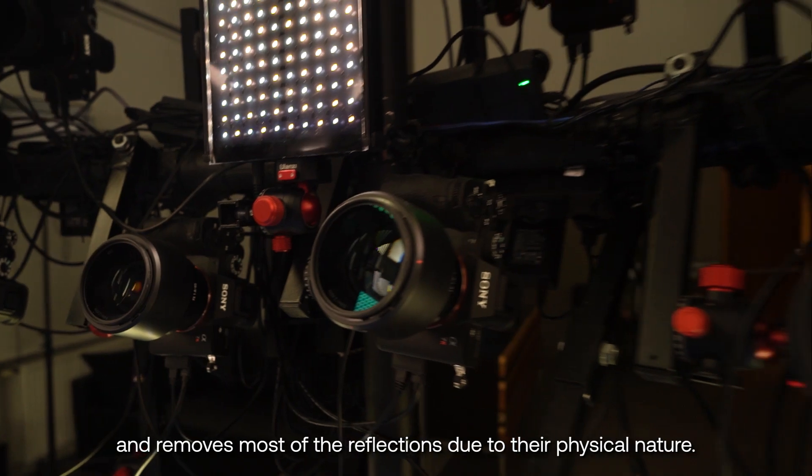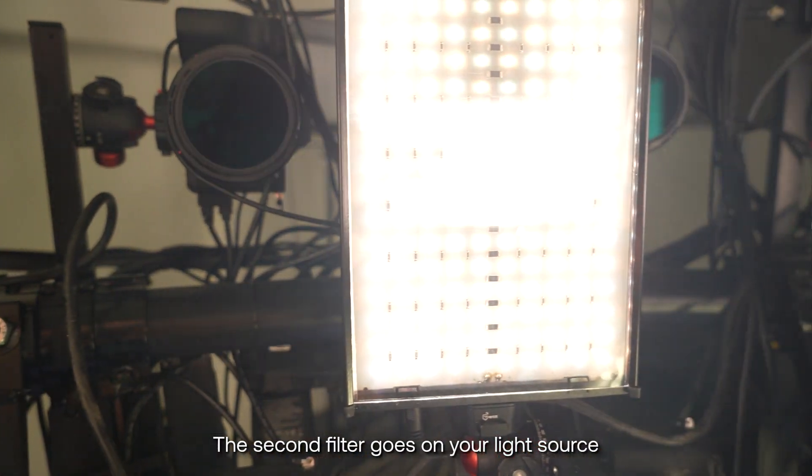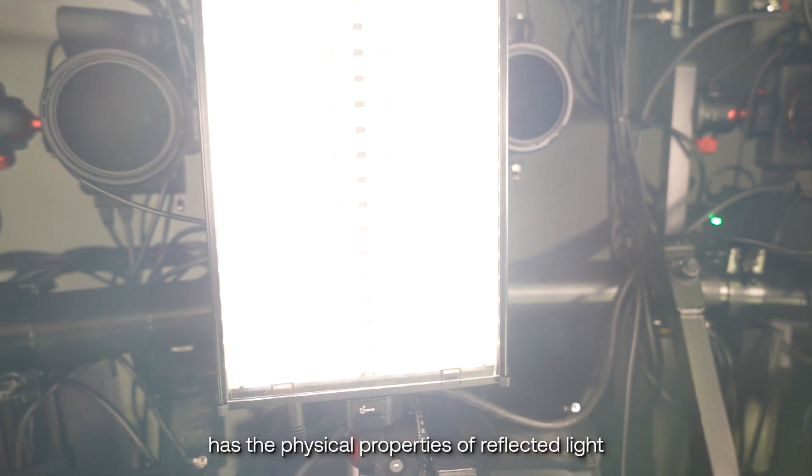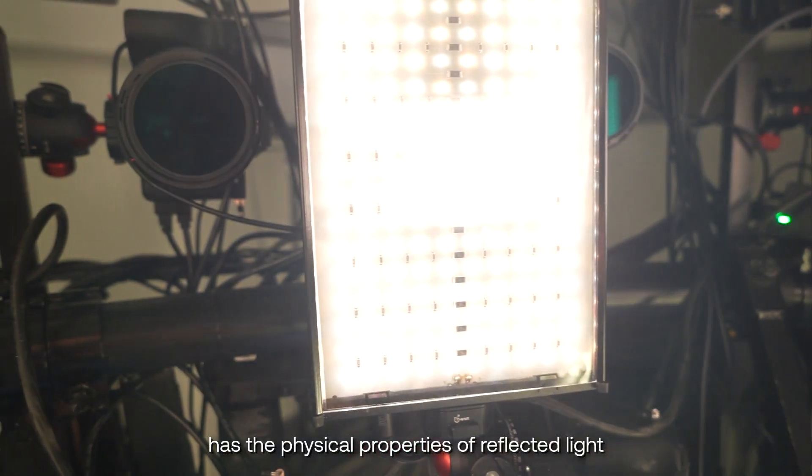The first filter goes on your camera lens and removes most of the reflections due to their physical nature. The second filter goes on your light source, such as a flash, and makes sure that the light emitted from this source has the physical properties of reflected light.